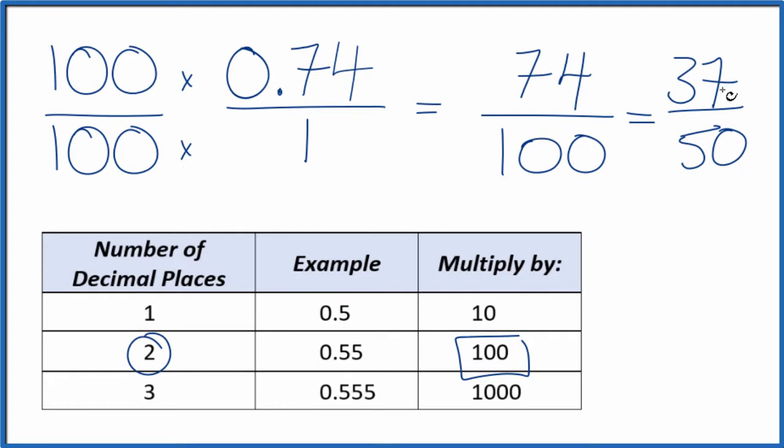So 0.74, the decimal, is equal to the fraction 37 over 50, or 74 over 100. If you divide 37 by 50, or 74 by 100, you'll end up with the decimal 0.74.